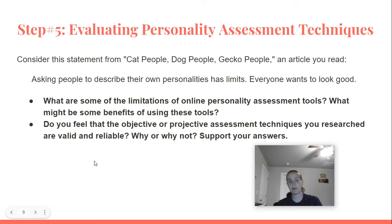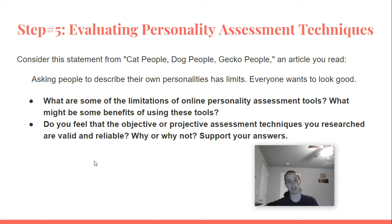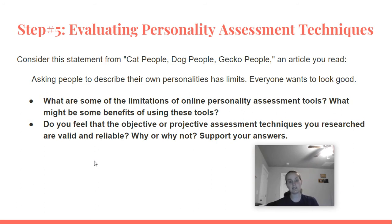Step five, the last step: evaluating personality assessment techniques. Consider this statement from the article 'Cat People, Dog People, Gecko People' that you read: 'Asking people to describe their own personalities has limits. Everyone wants to look good.' Thinking about those sentences, answer these questions: one, what are some of the limitations of online personality assessment tools, and what might be some of the benefits? Two, do you feel that the objective or projective assessment techniques you researched are valid and reliable? Why or why not? Support your answers — say whether or not you think they're valid and reliable, and then tell me why.